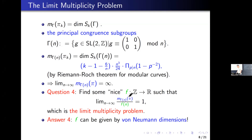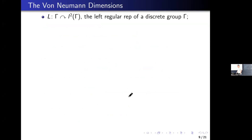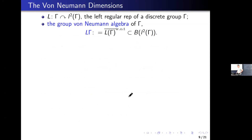The answer is that f can be given by von Neumann dimensions. Let's define the von Neumann dimension. We look at the left regular representation of a group. The group von Neumann algebra of gamma, denoted L(gamma), is the weak operator closure of the image of the action — that is, a subset of all bounded operators on the L2 space. There is a trace, usually the unique trace, given by an inner product.